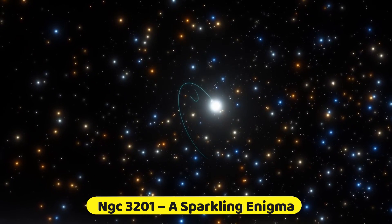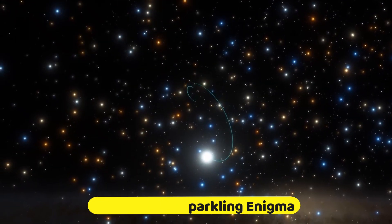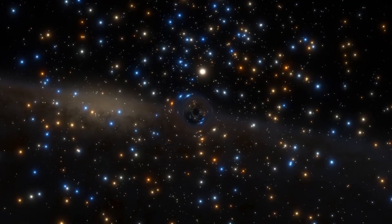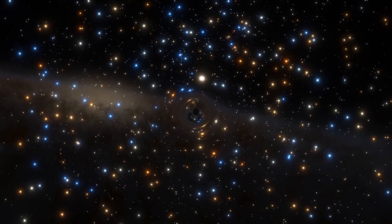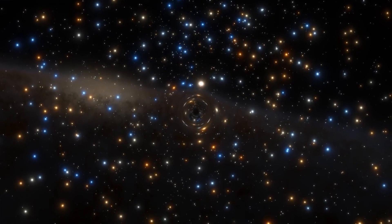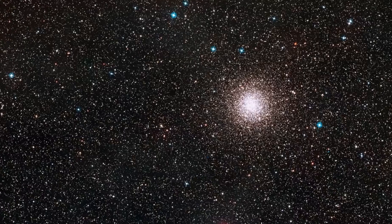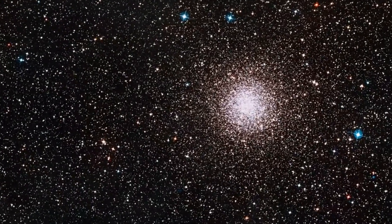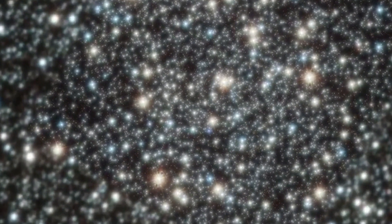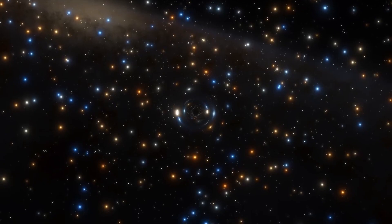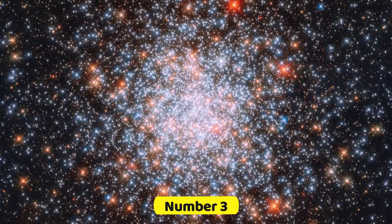Number 4. NGC-3201. A sparkling enigma. Meet NGC-3201, an ancient gathering of stars, also known as a globular cluster. Discovered by James Dunlop, this dazzling group has some quirks. It moves opposite to the galactic center and has speedy orbits. Some say it's a cosmic traveler captured by the Milky Way's charm, but its chemical makeup hints at a different story. A true astronomical beauty.